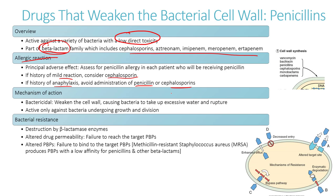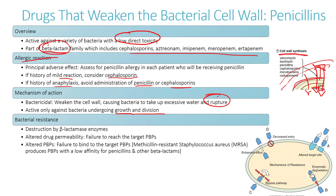Penicillins work by weakening the cell wall — the outer layer around the bacteria — allowing water to enter. As water goes in, the cell bloats and eventually ruptures. Penicillins are active only against bacteria that are undergoing growth and division; if a bacterium is not actively dividing, it is much harder to kill using penicillins.